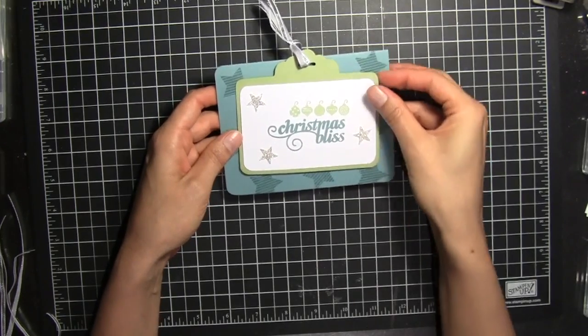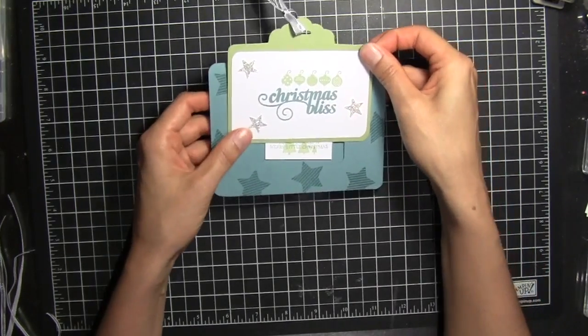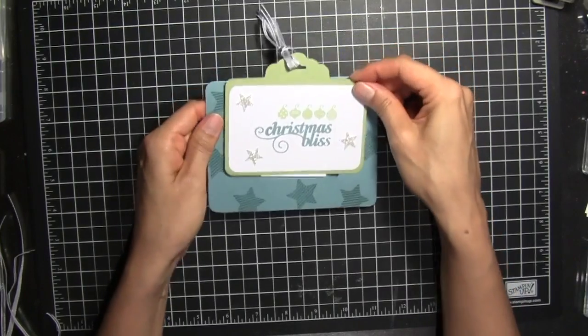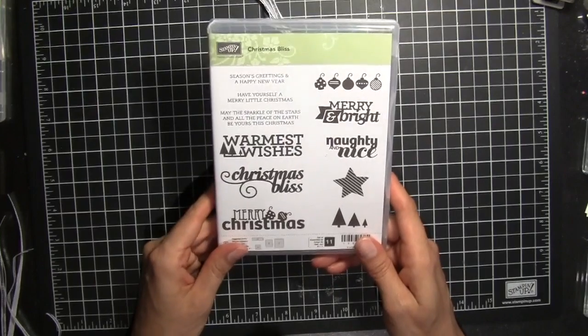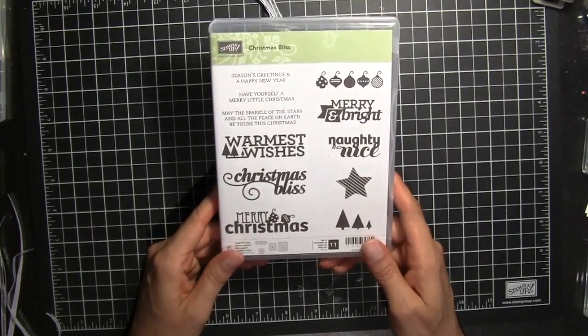In this tutorial I'm going to show you how to make this fun slider card. I've started by using the Christmas Bliss stamp set. It's a photopolymer stamp set. It's not available in any of the catalogs, it's separate.